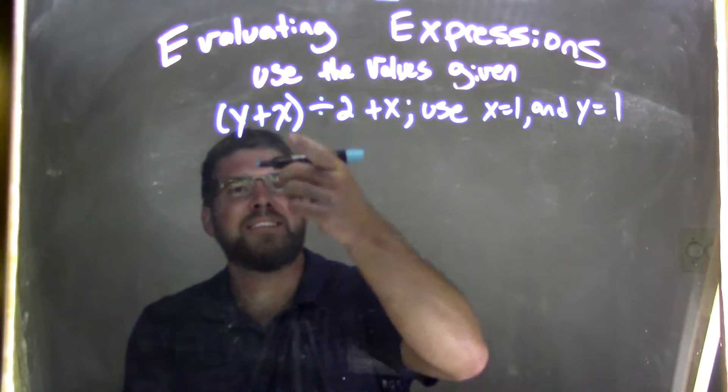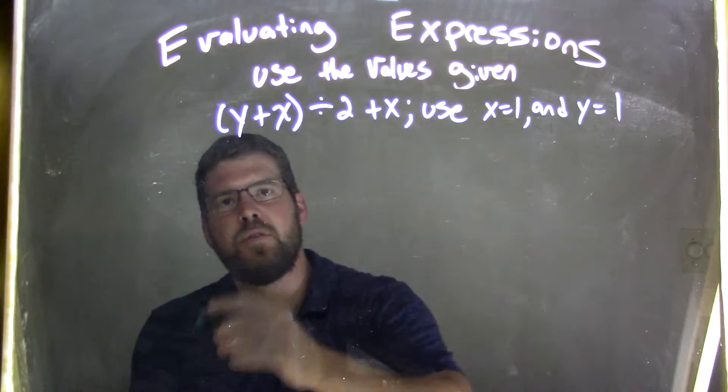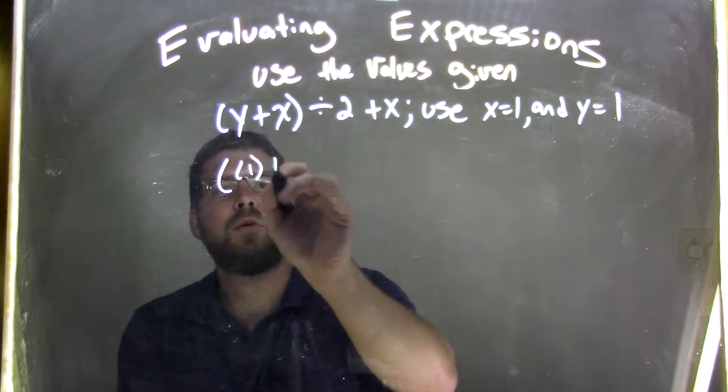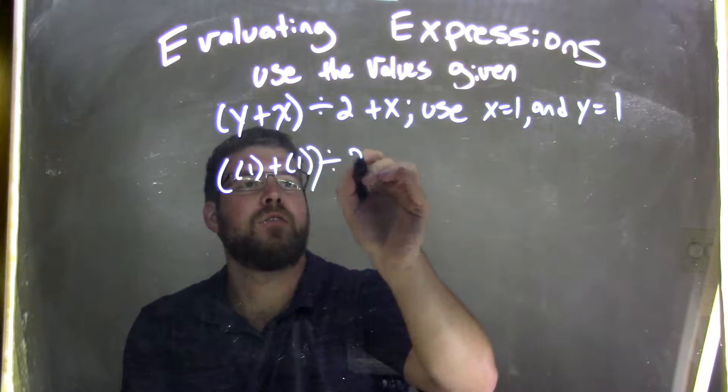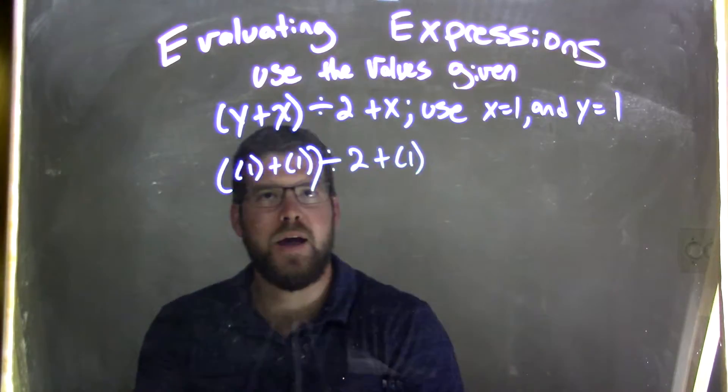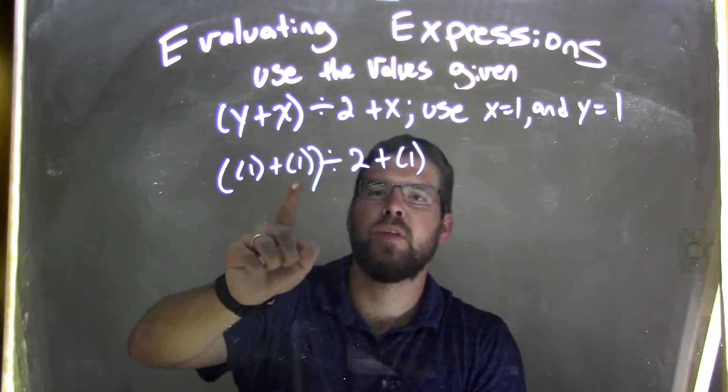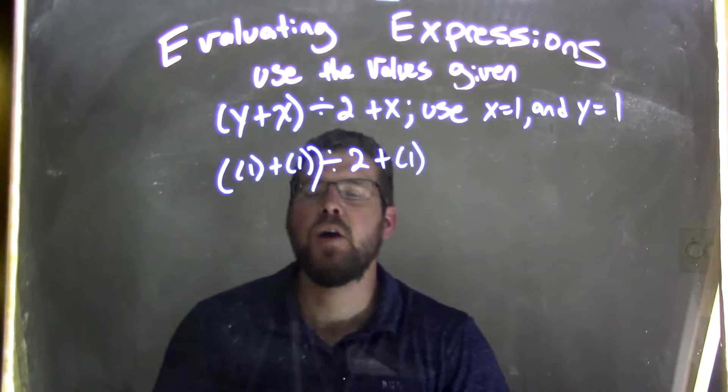Well, x is 1, we're going to substitute that in, and y is 1, we substitute that in. So we have 1 here plus 1 in for x, divided by 2, plus 1 in for x. So again, this one is for the y, this one's for the x, and this one's for this x.